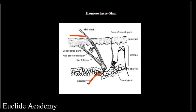When the body over-cools, the hair stands up to trap heat, and the erector muscles contract, leading to goosebumps on the skin. That is about the skin and how it carries out several processes in the body when it comes to homeostasis. The capillaries, sweat glands, hair follicles, hair shafts, and pores are all very important in the process of homeostasis.